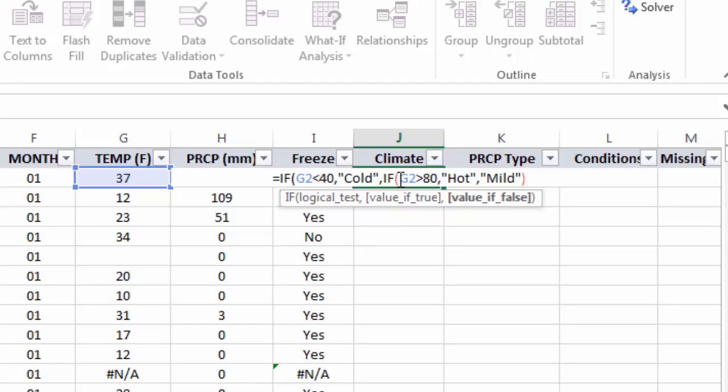What that's telling me is that I'm not done with this formula. I haven't closed out all of my parentheses. So when I add the second, you'll see that it will be bold and black, and it matches with the first parenthesis at the beginning of my formula, which tells me that I'm done, and I can press enter.